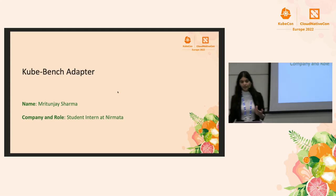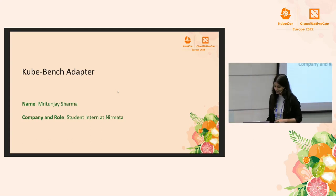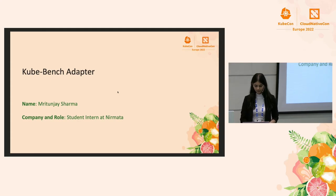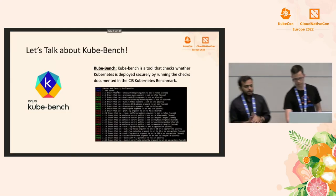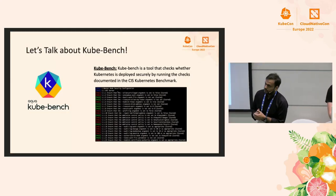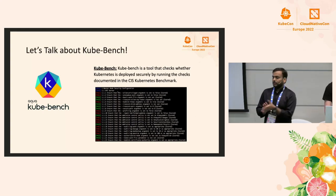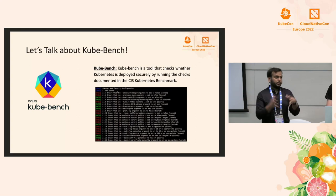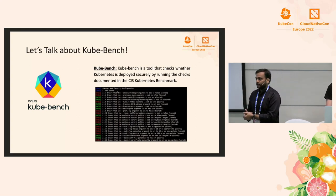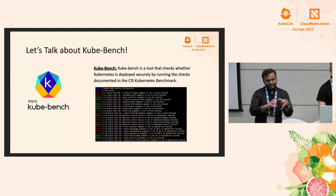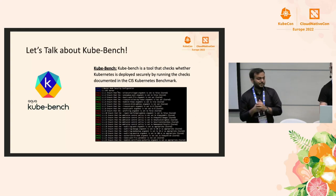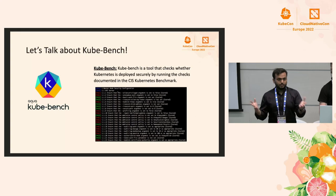We will now move on to the adapters that were built, and we have Mrithan Jay going with the first adapter called Kubebench Adapter. Kubebench is a tool built by Aqua Security, and what it does is help us run CIS security benchmark checks for the Kubernetes clusters we are running, whether on AKS, EKS, or any other clusters. Those checks are performed by Kubebench, and it gives us results — but how to move forward with these results is what we solve with the Kubebench Adapter.